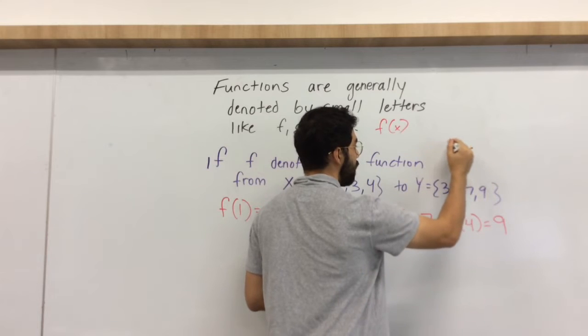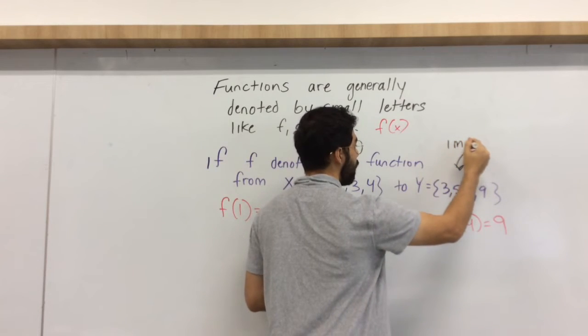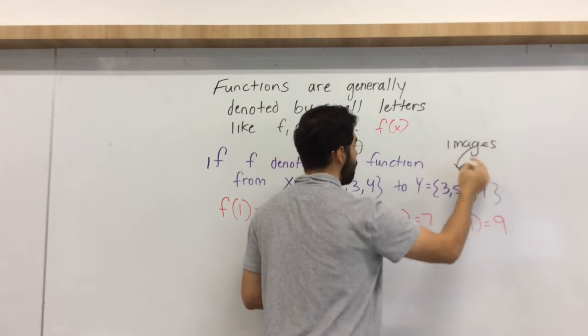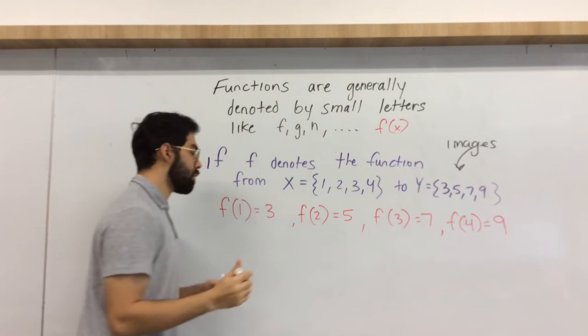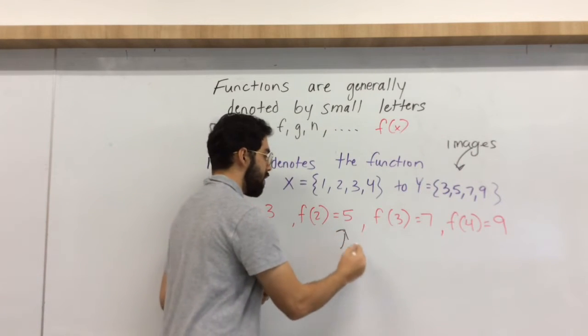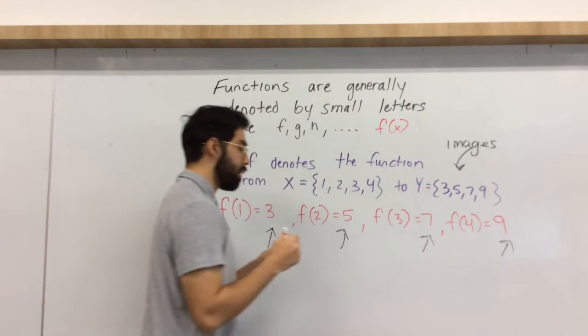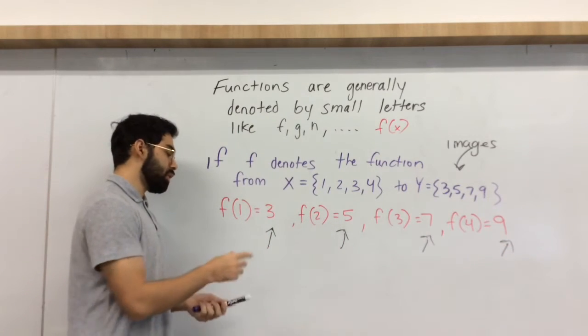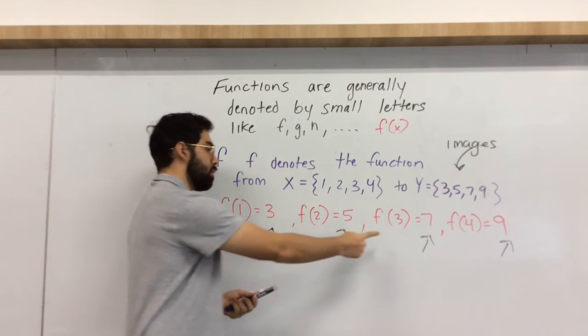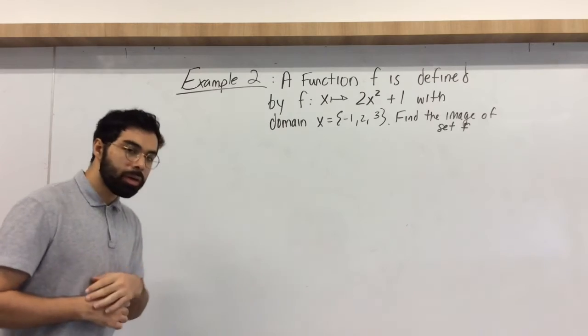All right, quick note. Again, another vocab word. These are called images. Your outputs are called images. So in this case, 3, 5, 7, and 9 are your image, or the image of 1, 2, 3, and 4 respectively.